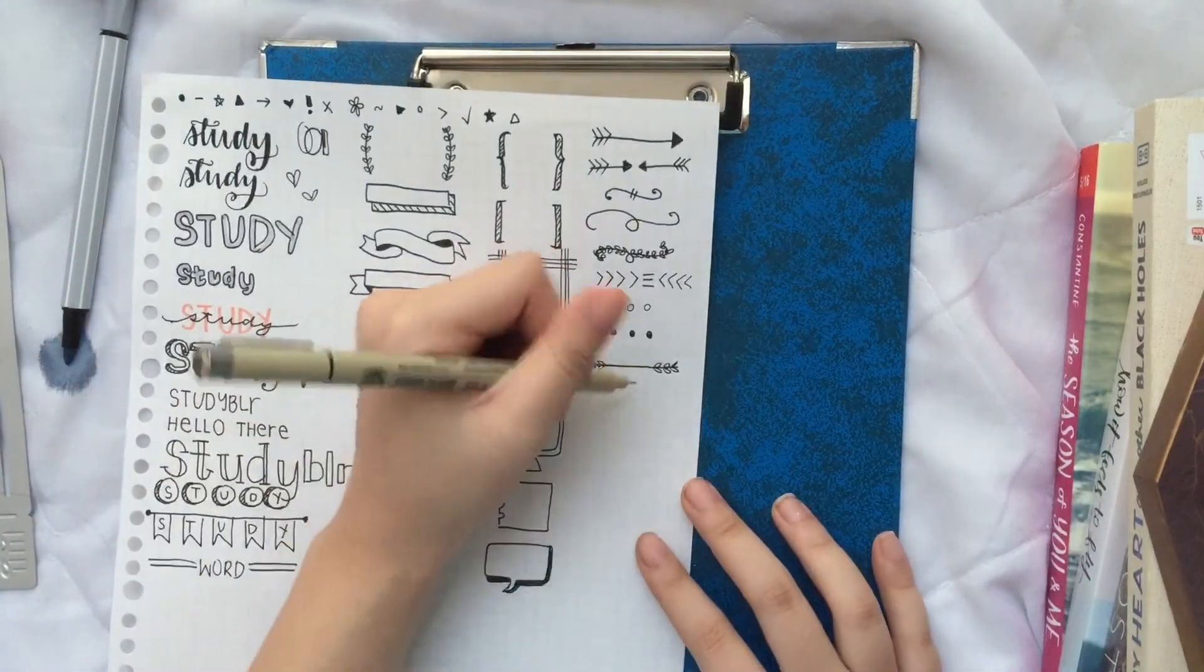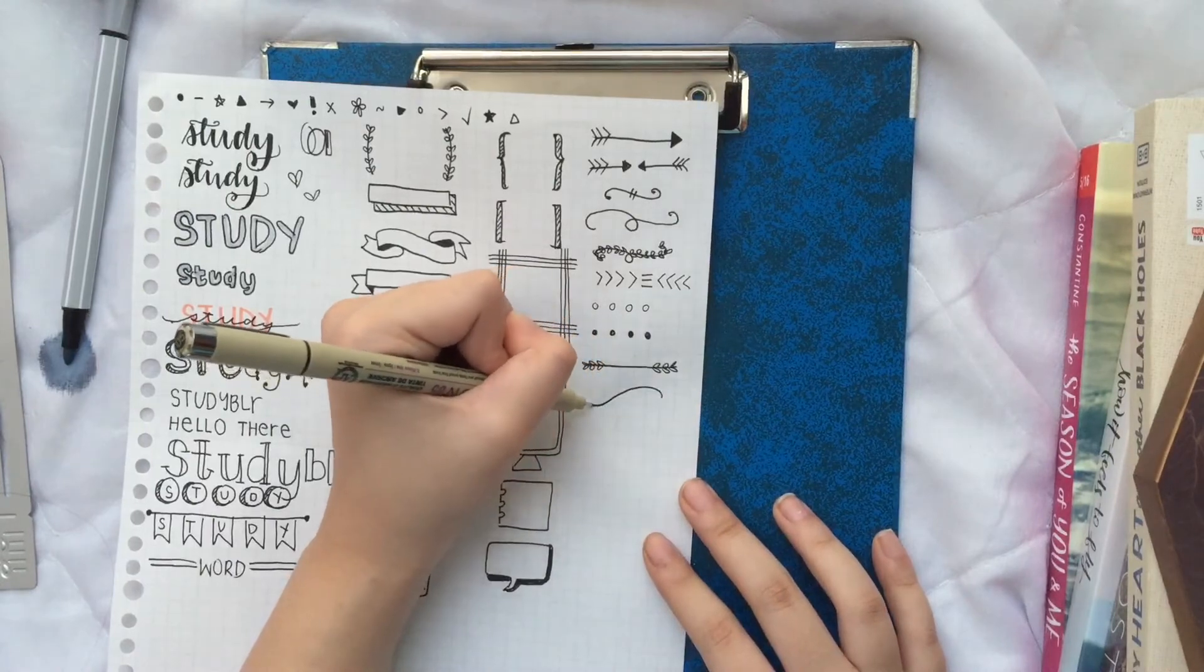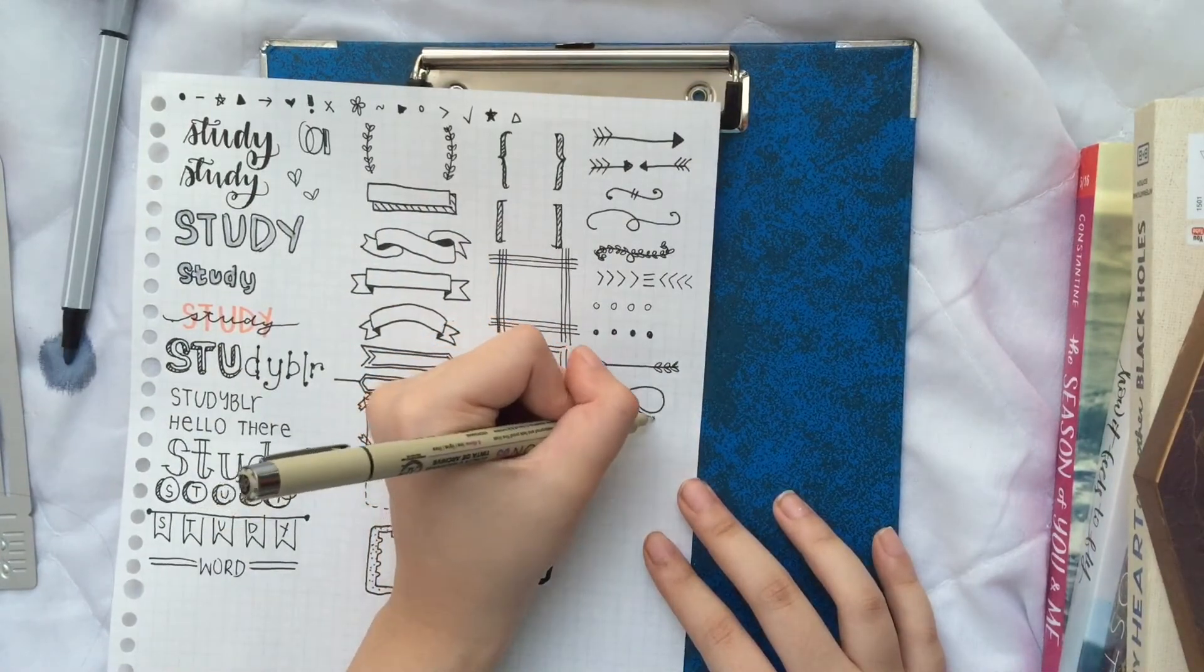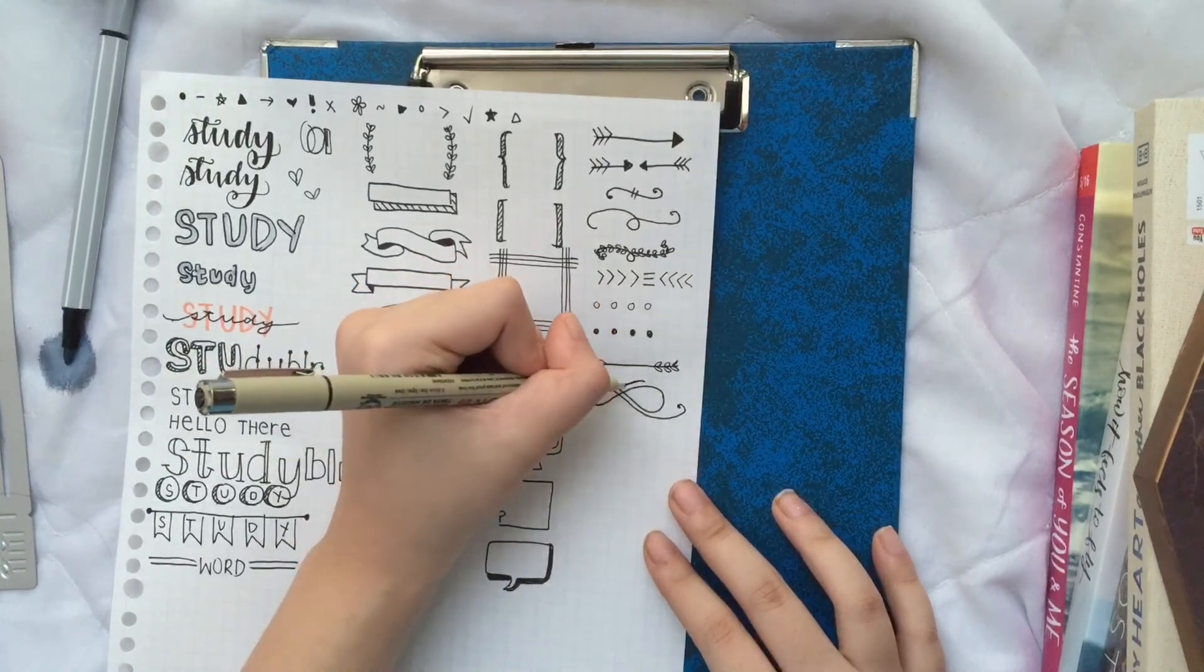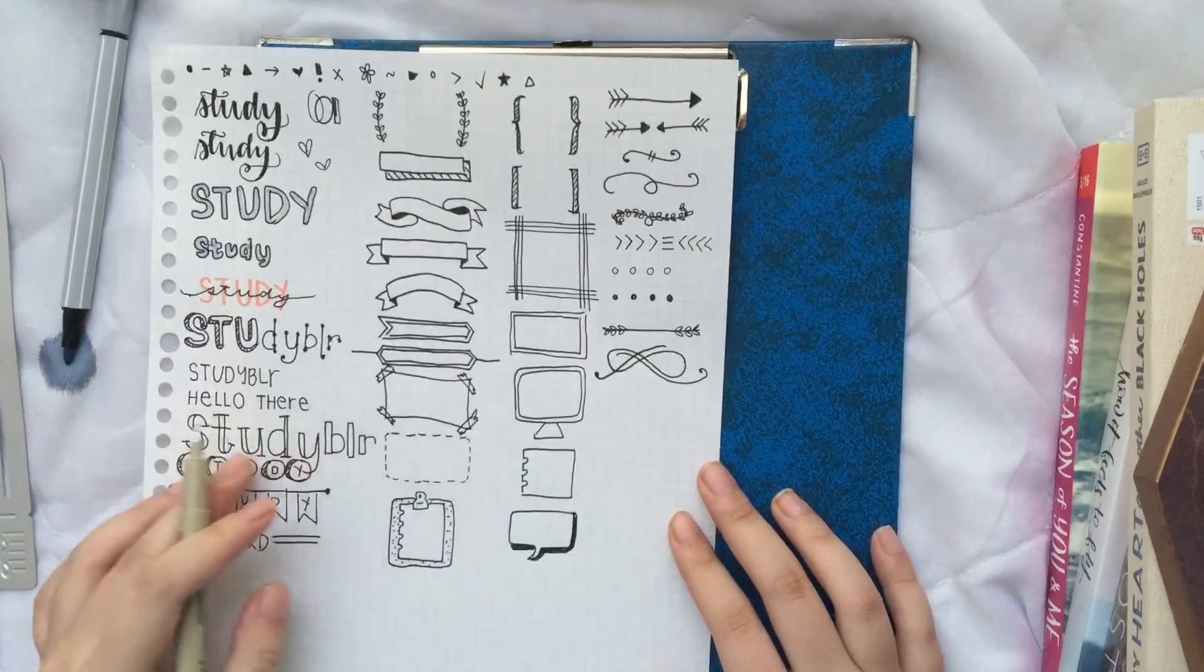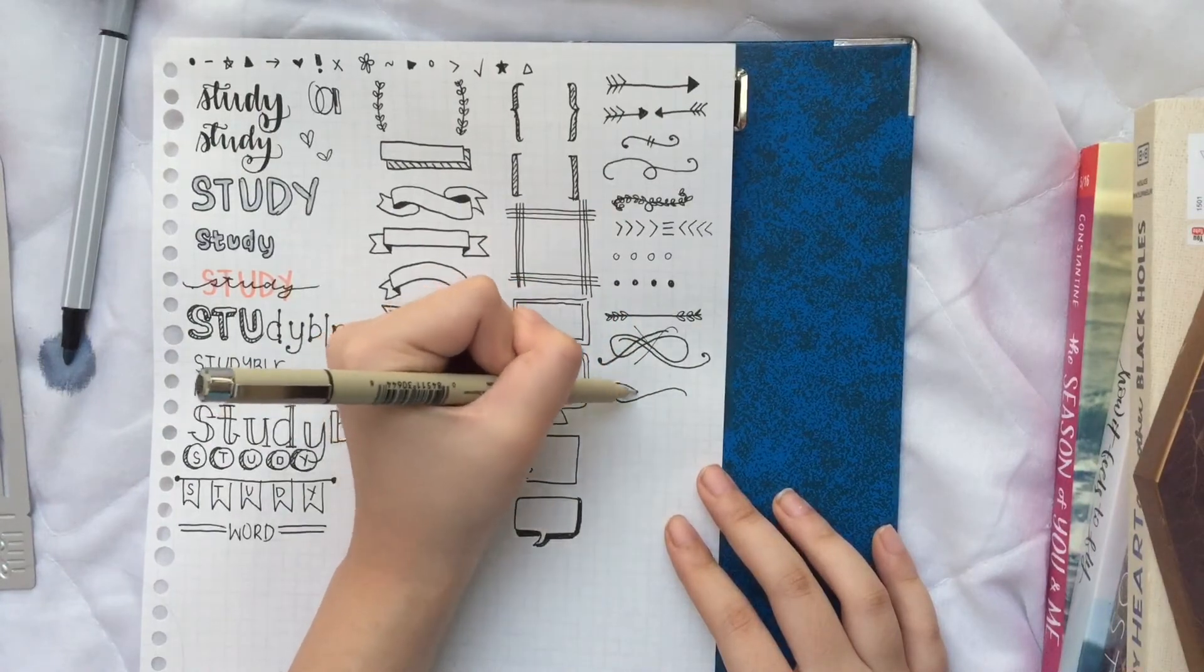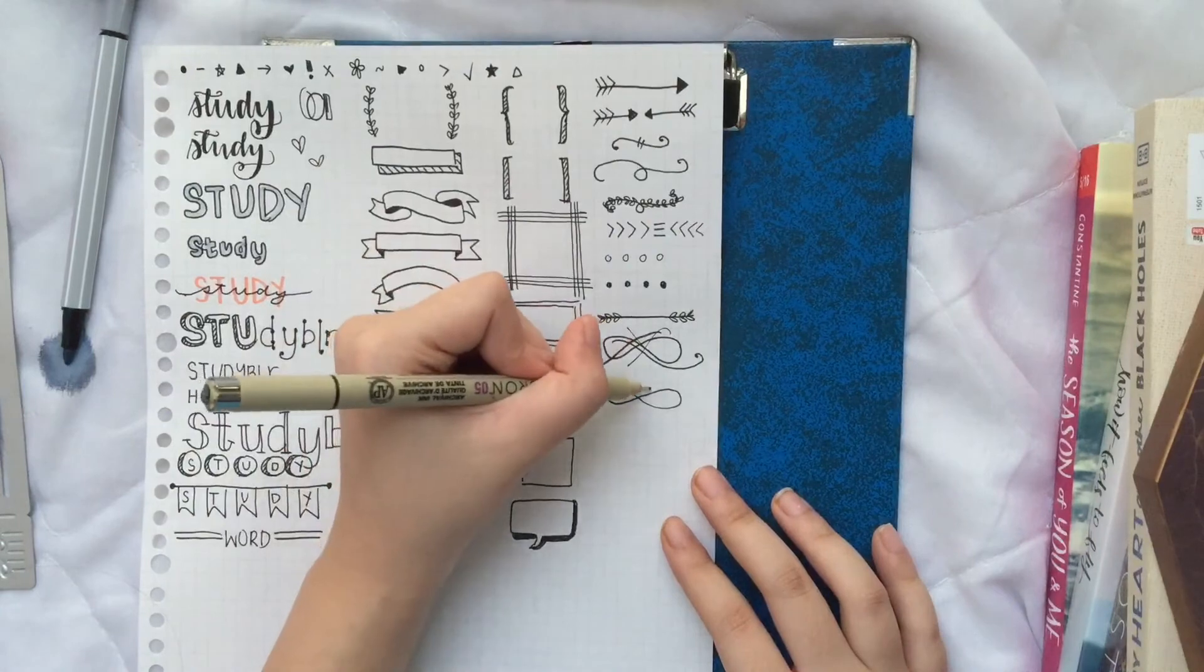And finally, this one with the infinity sign, but with added lines. Oops, sorry, I did that wrong. Okay, let's do that again. Oh no, looks like crap.